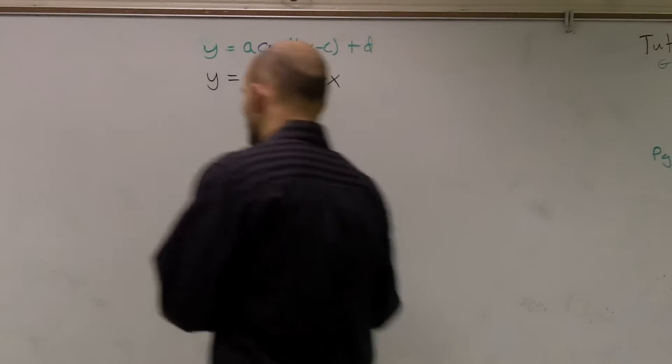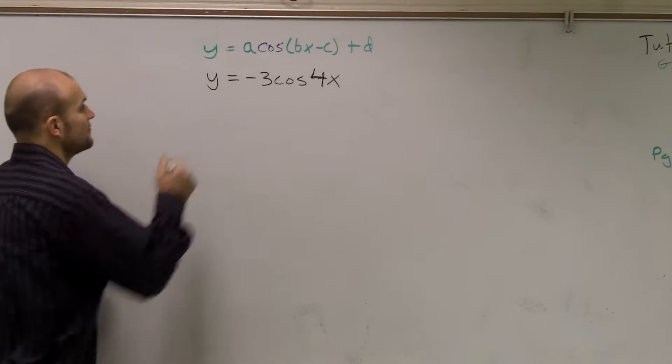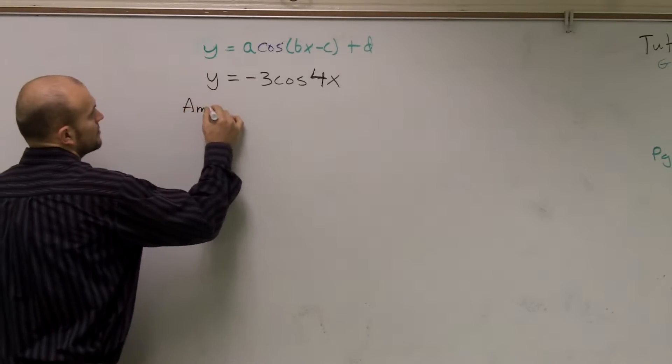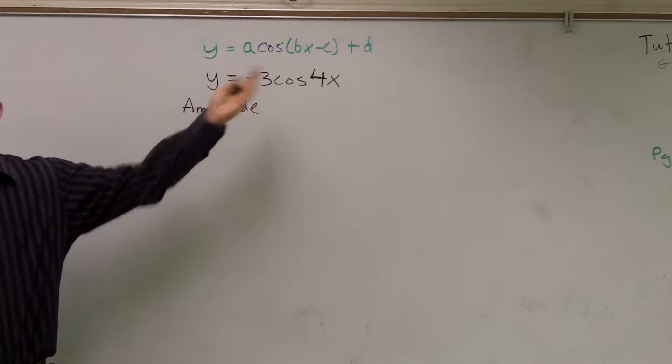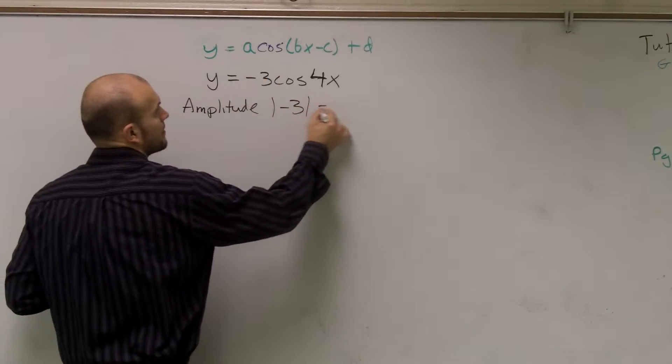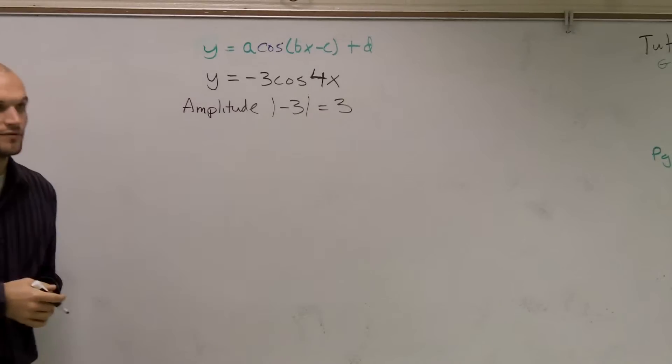All right, so we're going to graph this. Let's just go through our important points. First thing, amplitude. Absolute value of negative 3, which is easy enough, right?